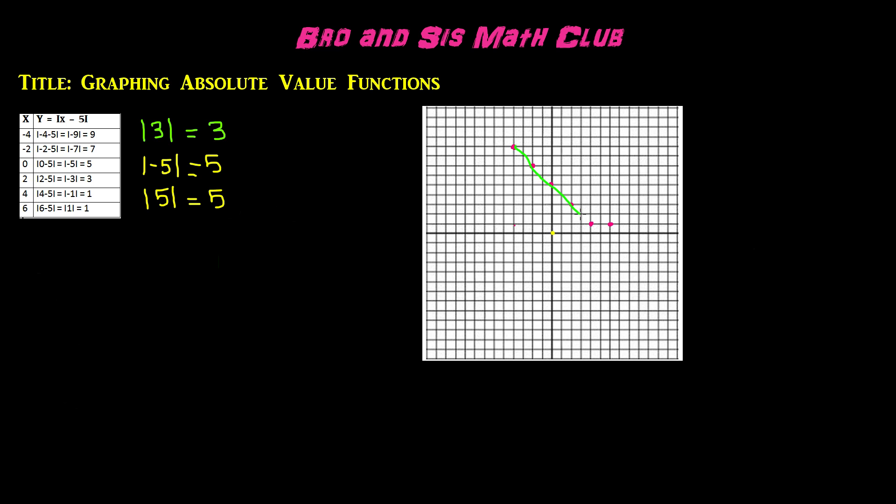We know that the lines we've made on our graphs have been straight because they were linear functions. But absolute value functions are different because of the values that you get when you find the absolute value by plugging it in.